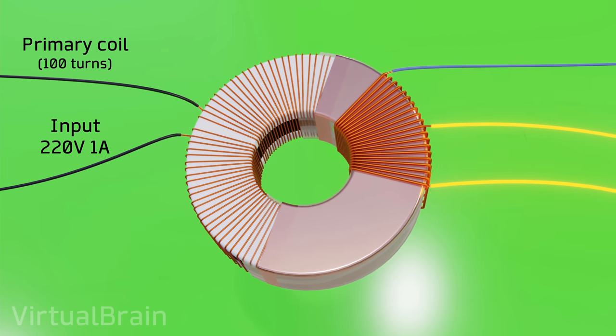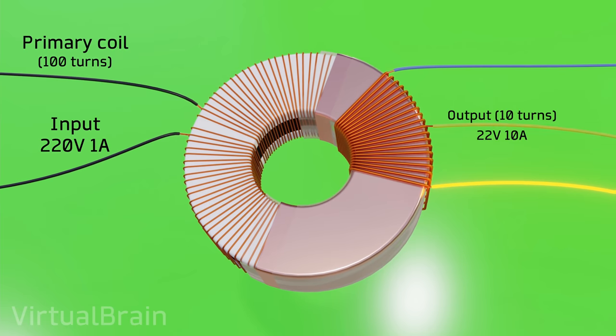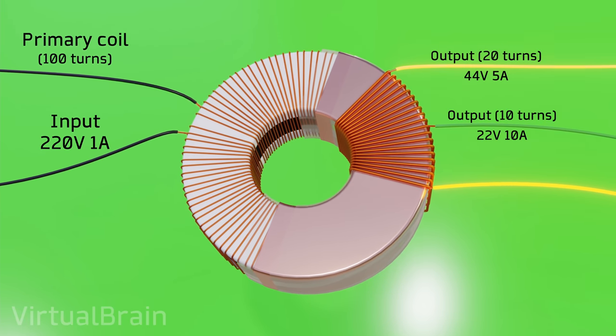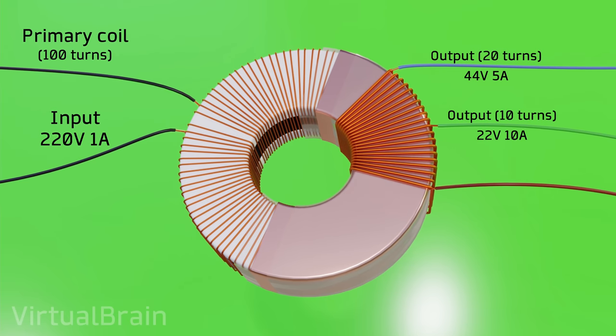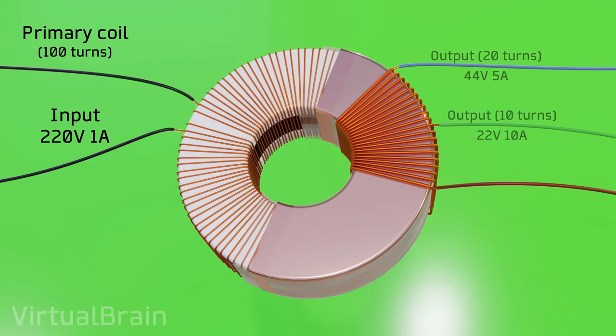If we use the first and second cable, we will get 22 volts, and if we use the first and third cables we will get 44 volts. This means that we achieved the same results with 10 less turns and 1 less output cable.